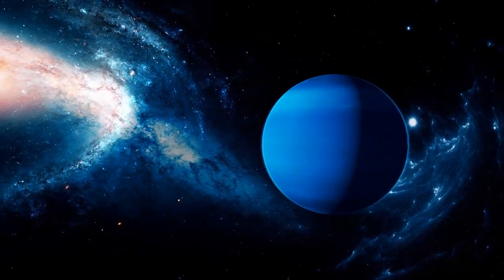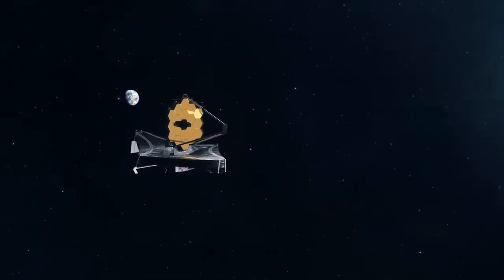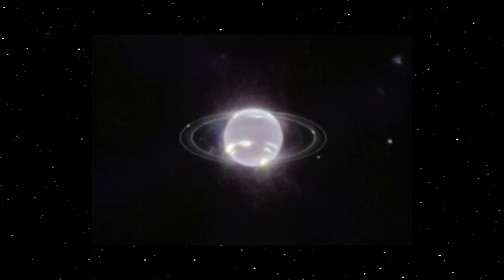Neptune was visible out there in the void of space in a series of photographs that the James Webb Space Telescope transmitted back on Wednesday from the edge of the solar system. A previously unseen set of rings were visible surrounding the planet in the photograph.